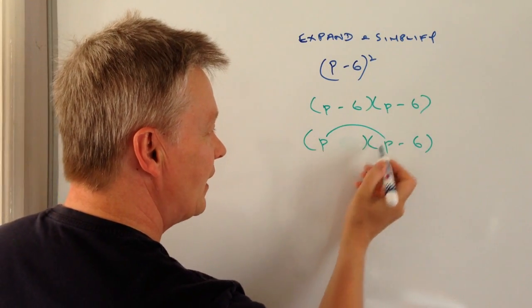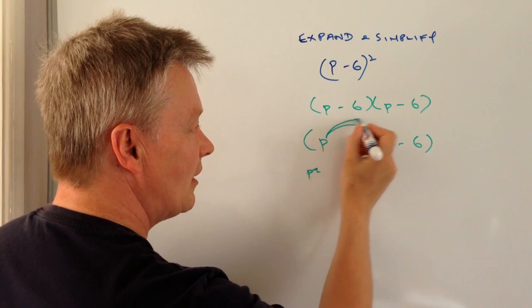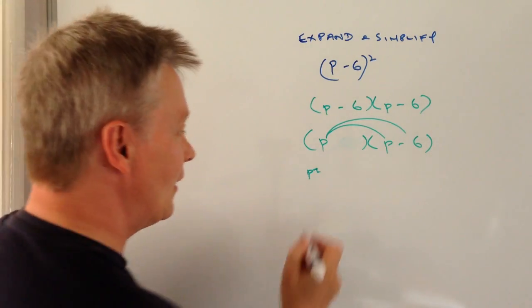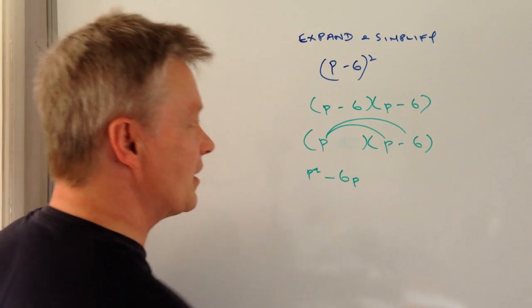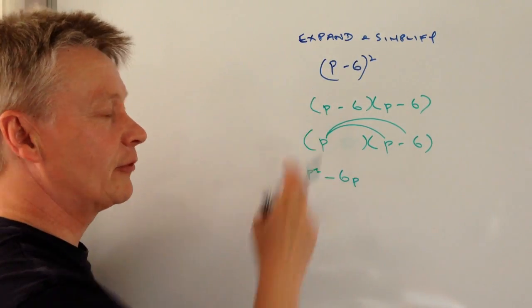So p times p is going to be p squared and then p times minus 6 is going to be minus 6p. So that really takes care of the first part where I've multiplied through by p.